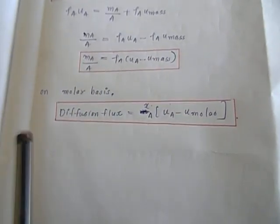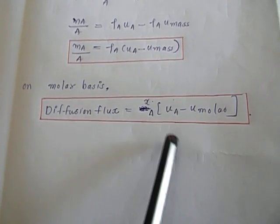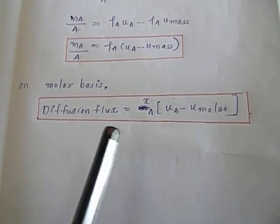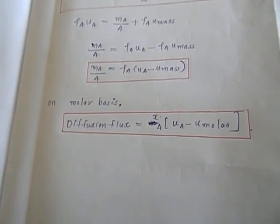If it is on molar basis, diffusion flux is equal to X_A into (U_A minus U_molar). This is all about concentration, velocity and flux. Thank you.